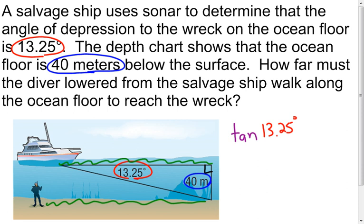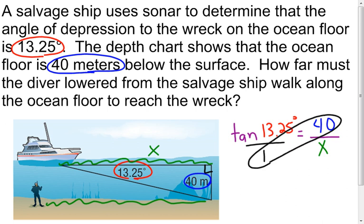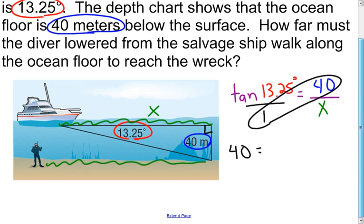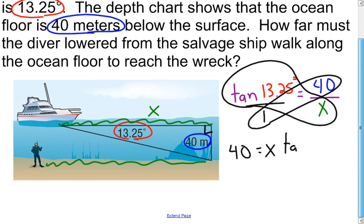The tangent of 13.25 degrees equals the opposite side, which is 40, over my adjacent side — I'll call it x, which is the green segment. Turning it into a proportion and cross-multiplying, I find that 40 equals x times the tangent of 13.25 degrees. I solve by dividing both sides by the tangent of 13.25.